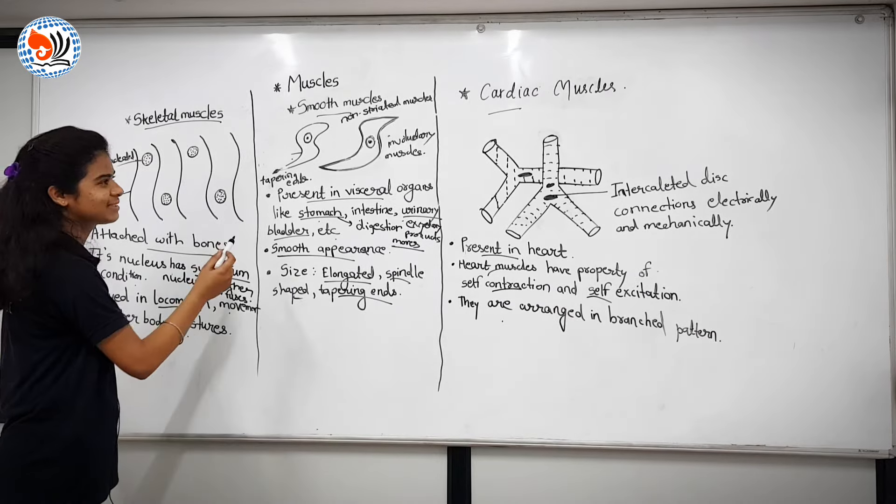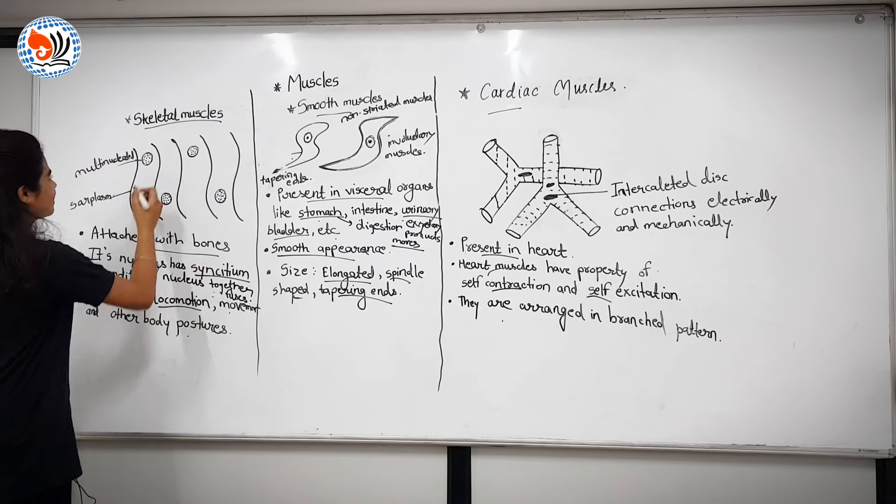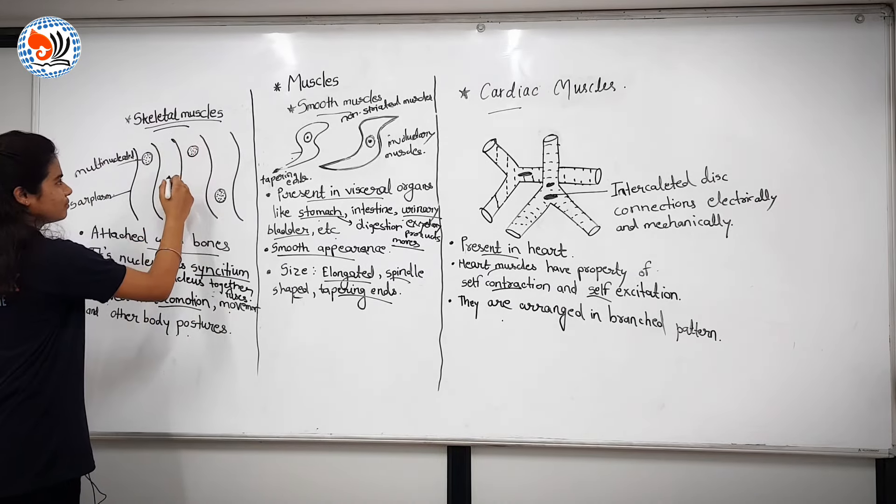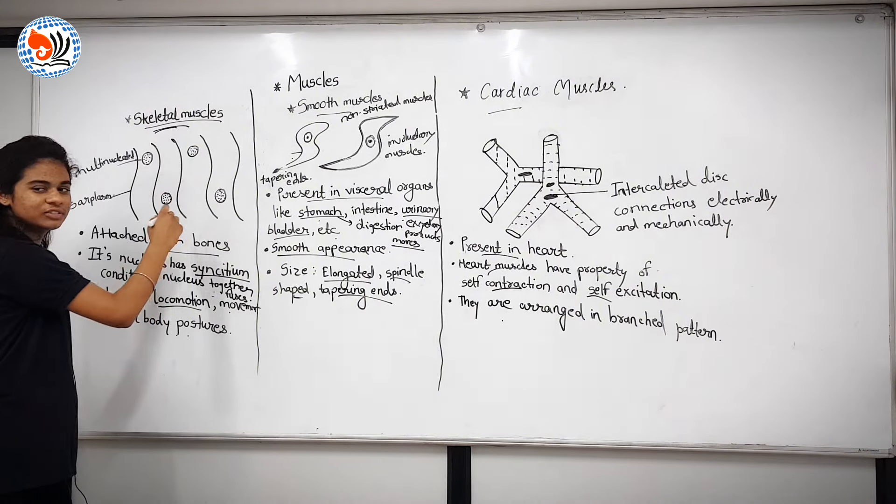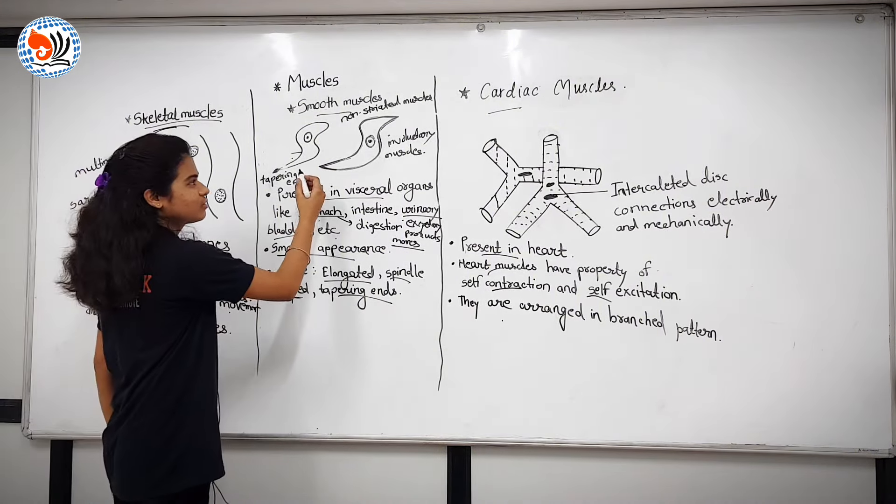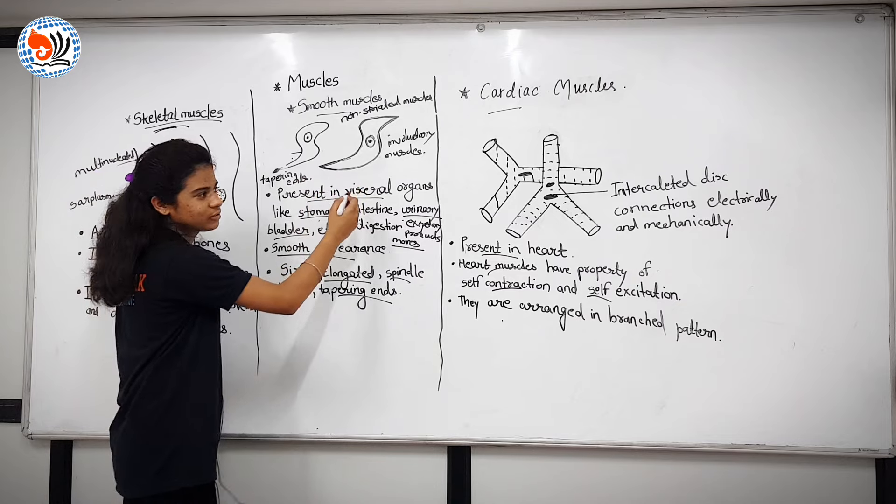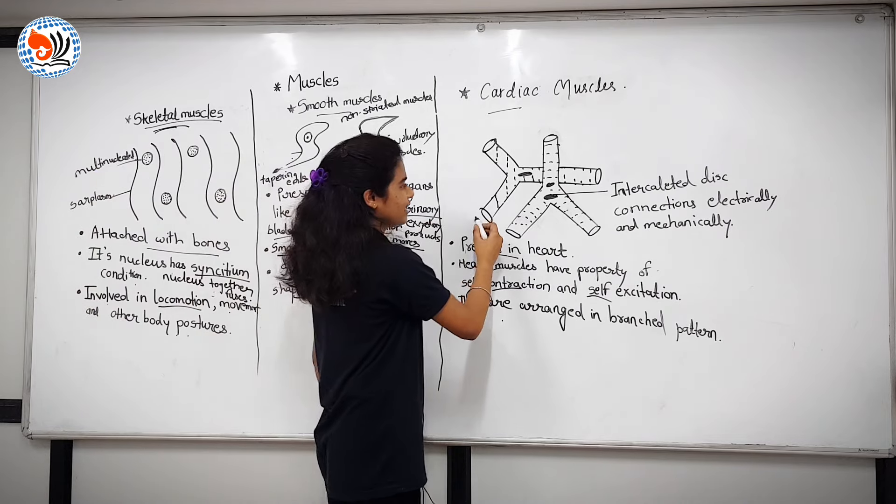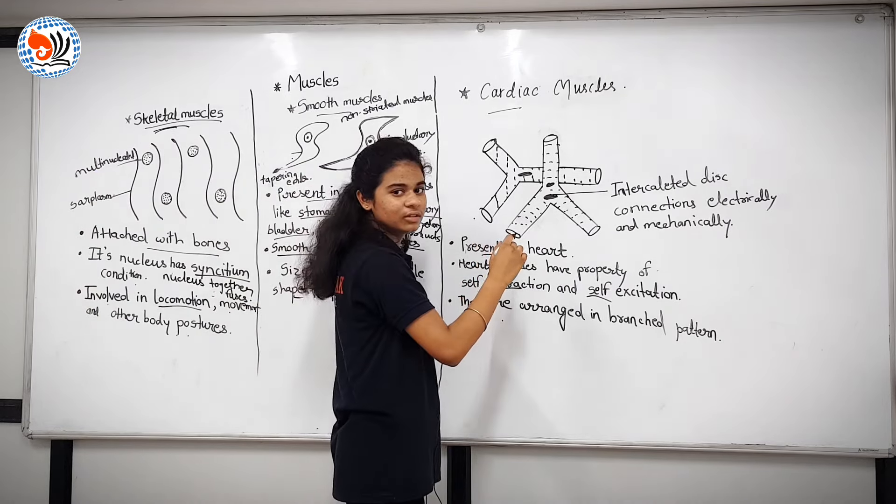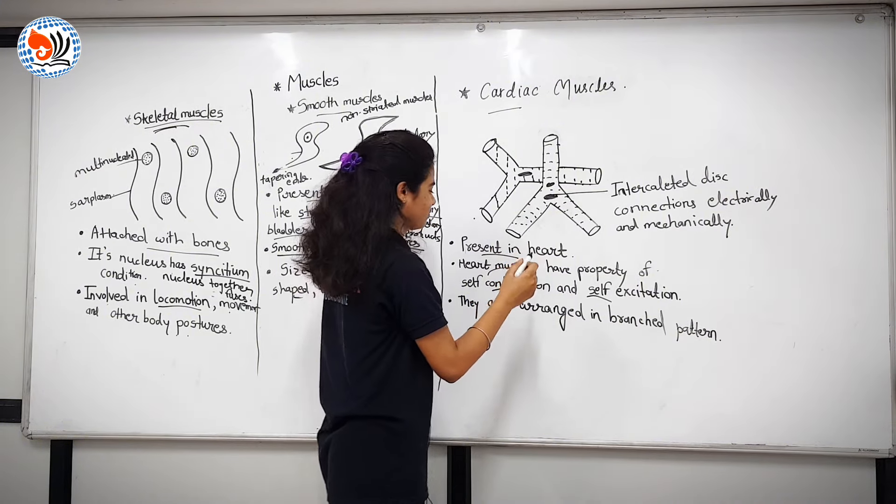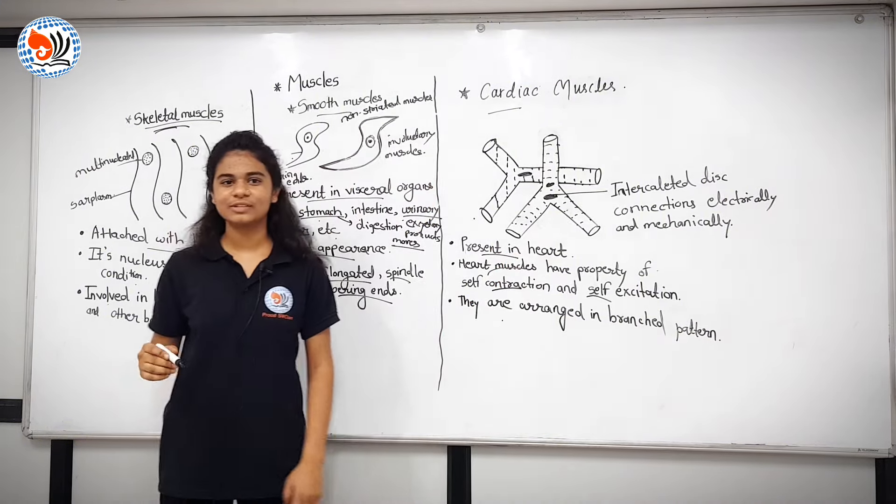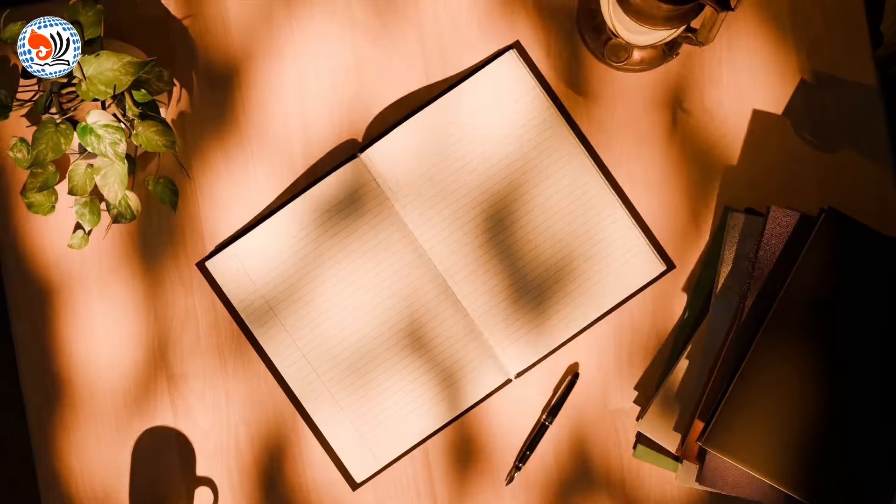These three are the main muscles. The main point is that the skeletal muscles are voluntary and striated muscles. Smooth muscles are non-striated muscles and involuntary muscles. Cardiac muscles are striated and involuntary muscles. Thank you.